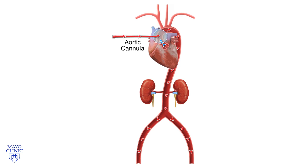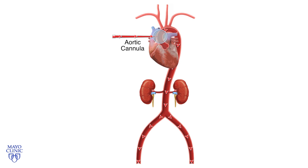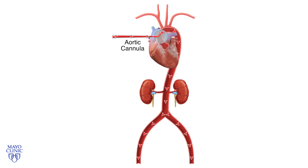However, as the heart recovers and begins to beat, the aortic valve opens and blood flow from the native circulation now mixes with blood exiting the centrally placed arterial cannula. The composition of the blood distal to that mixing cloud will depend on the relative outputs of each of the two circulatory systems.